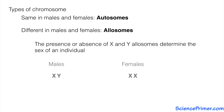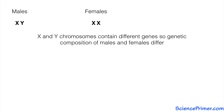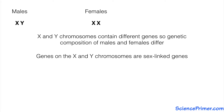Males have one X and one Y chromosome, while females have two X chromosomes. Due to the differences between the X and the Y chromosomes, the number and types of genes inherited by an individual depends upon its gender. The genes present on the X and Y chromosomes are called sex-linked genes.